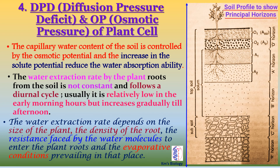The fourth important factor of the SPAC system is diffusion pressure deficit and osmotic pressure of plant cell. The capillary water content of the soil is controlled by the osmotic potential, and the increase in solute potential reduces the water absorption ability. The water extraction rate by plant roots from the soil is not constant and follows a diurnal cycle — relatively low in the early morning hours but increases gradually till afternoon. The water extraction rate depends on the size of the plant, the density of the root, the resistance faced by water molecules to enter the plant roots, and the evaporative conditions prevailing in that place.